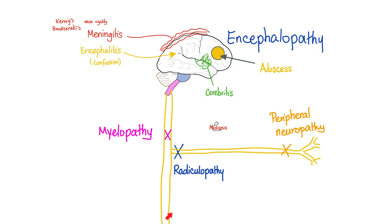Now let's talk about your spinal cord. If the disease affects the spinal cord itself, which lies in the core of your vertebral canal, we call it myelopathy — because myelo means the core, in the middle, in the center of your vertebral canal. But if the disease affects the spinal nerve root as it leaves the spinal cord, it's called radiculopathy. If it affects the peripheral nerve, it's called peripheral neuropathy. And this can happen to a cranial nerve or to a spinal nerve.